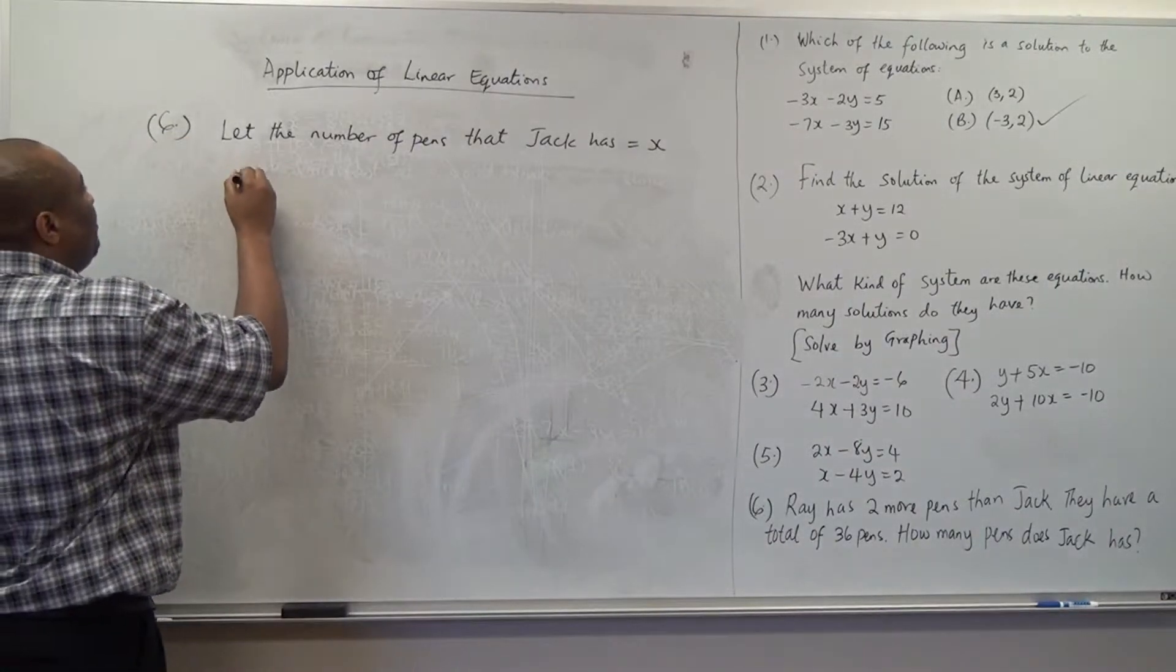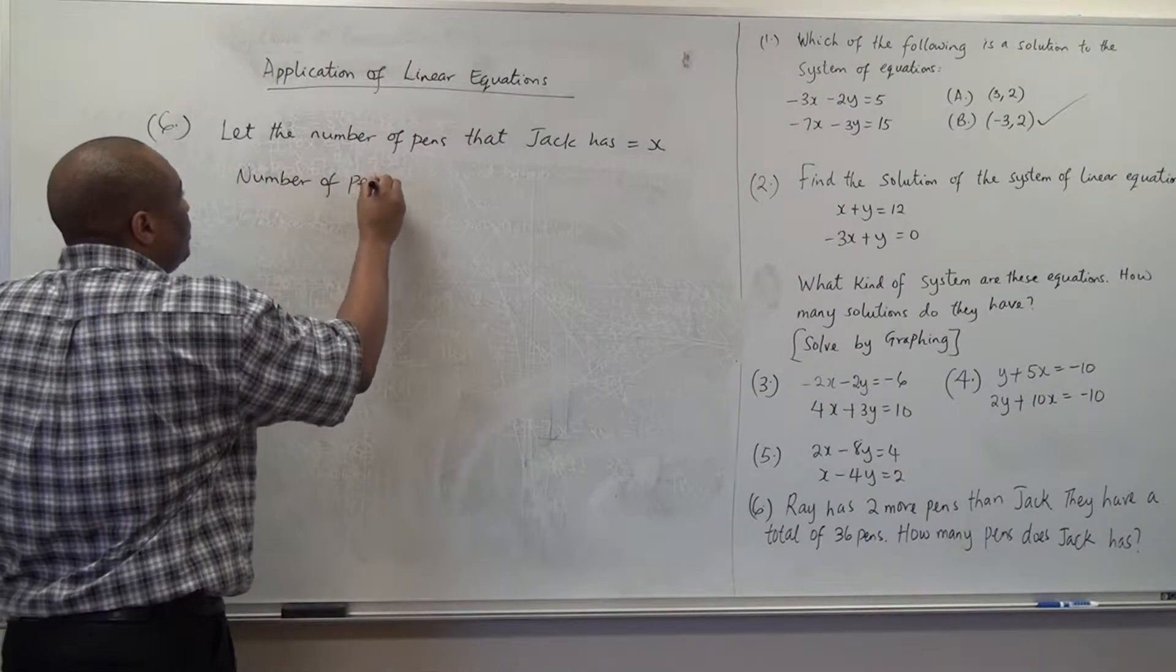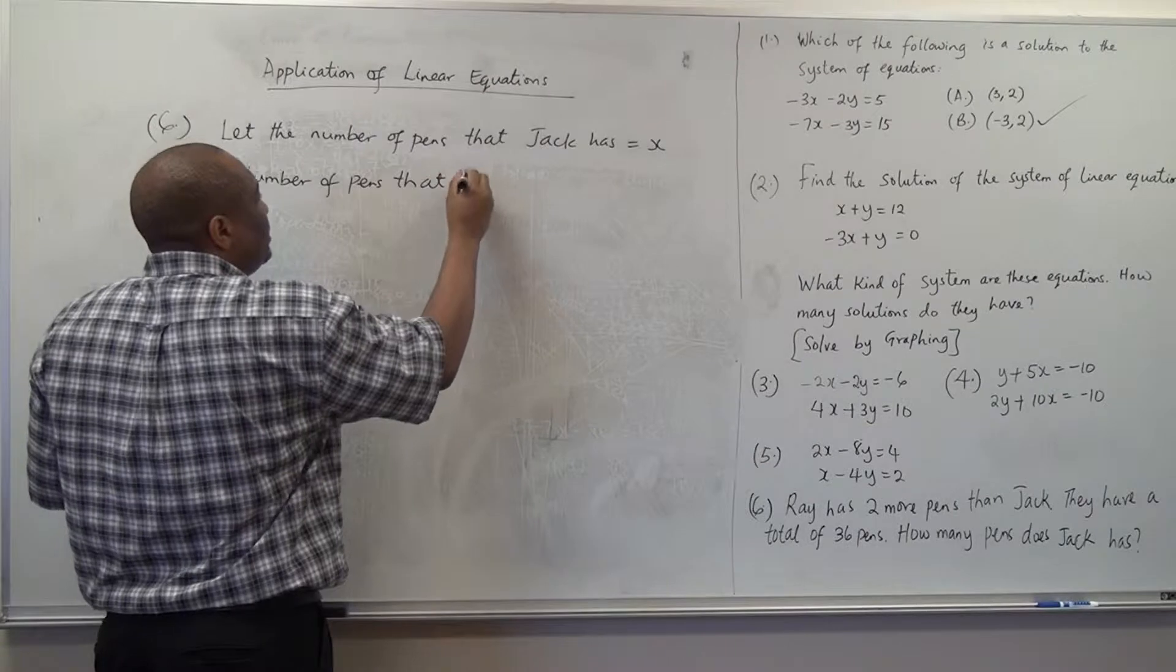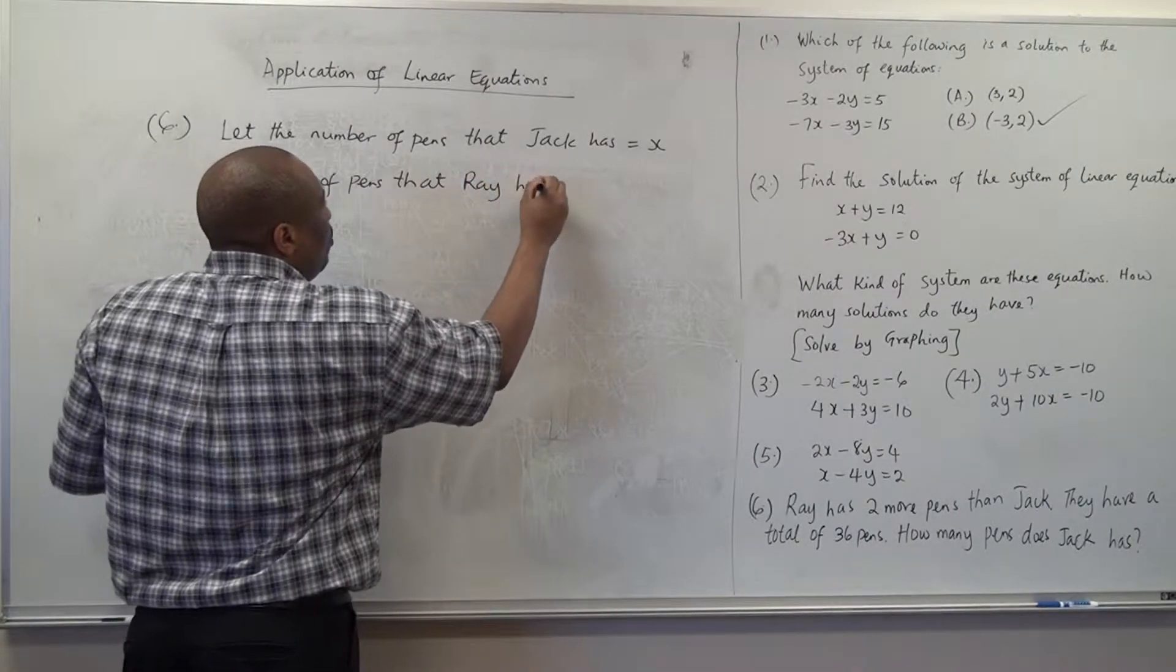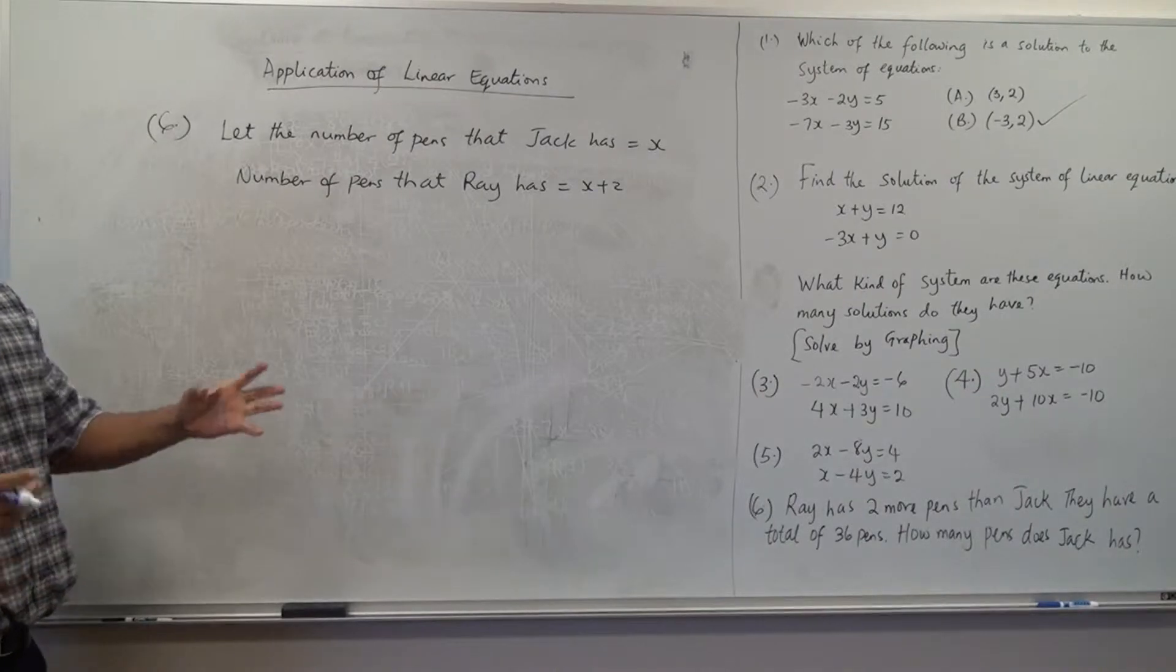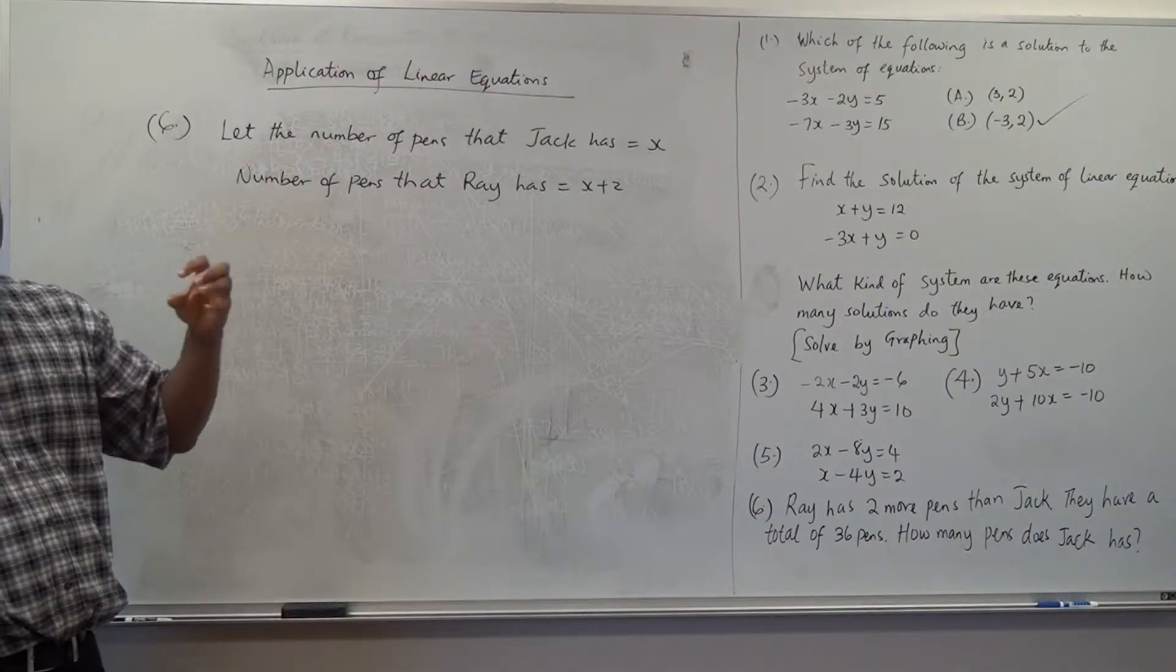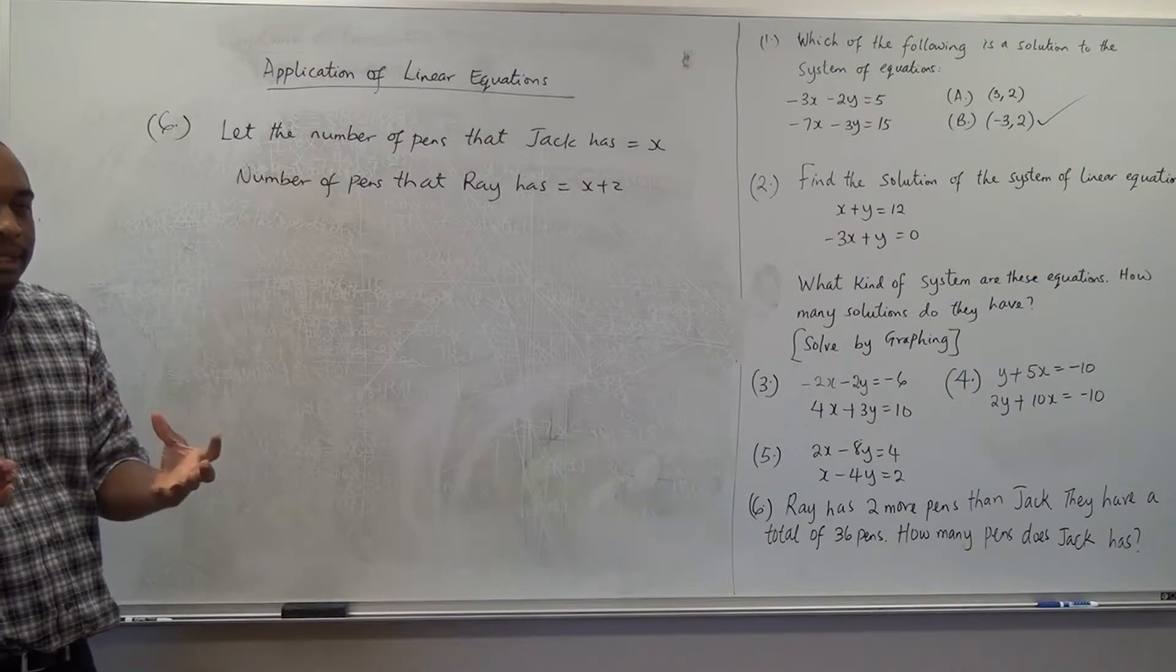So, the number of pence that Ray has will now be x plus two. And then, they now told us they have a total of thirty-six pence. All together, they have a total of thirty-six pence.